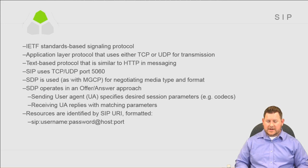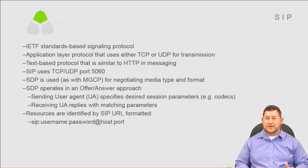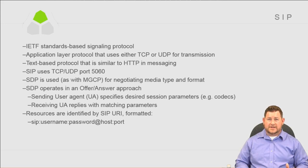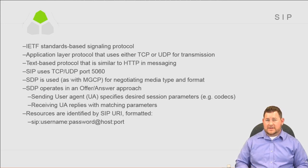The SIP URI format: SIP colon username and password if required, at host colon port — typically port 5060. The host is an IP address or domain name if DNS is in the network. The username will often be a phone number. For example, calling from HQ Phone 1, it would be 1001 at 10.10.13.11 colon 5060 as the URI passed when sending a call.